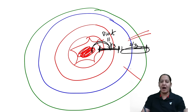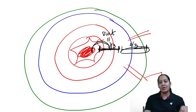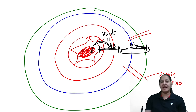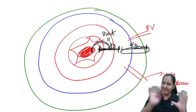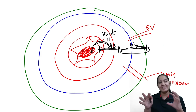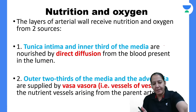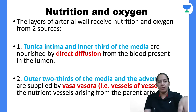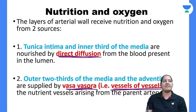For the outer two-thirds, there are small arteries supplying the wall of the blood vessel, known as vasa vasorum — meaning 'blood vessel of the blood vessel.' So the inner one-third is supplied by direct diffusion from luminal blood, and the outer two-thirds is supplied by vasa vasorum.